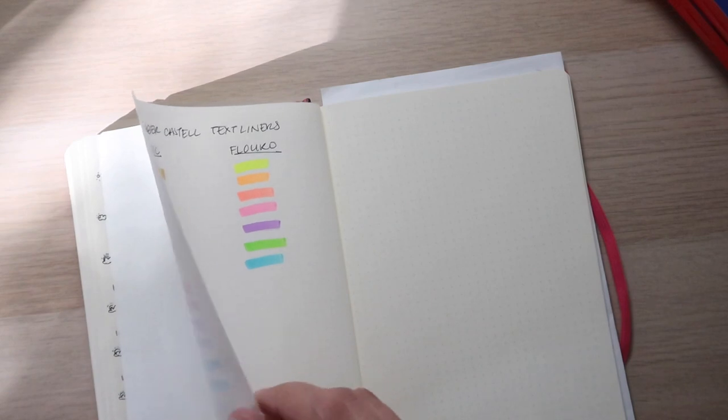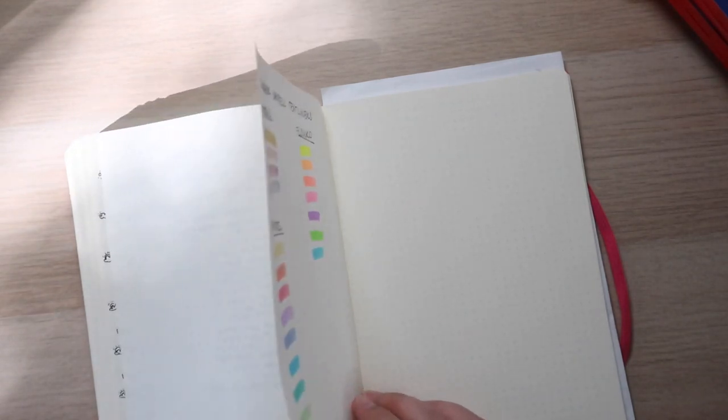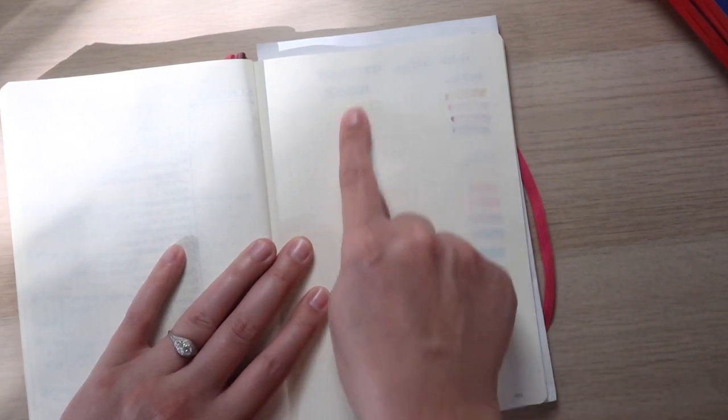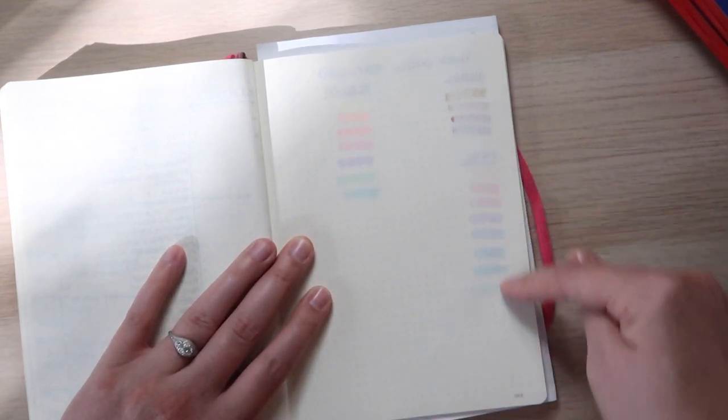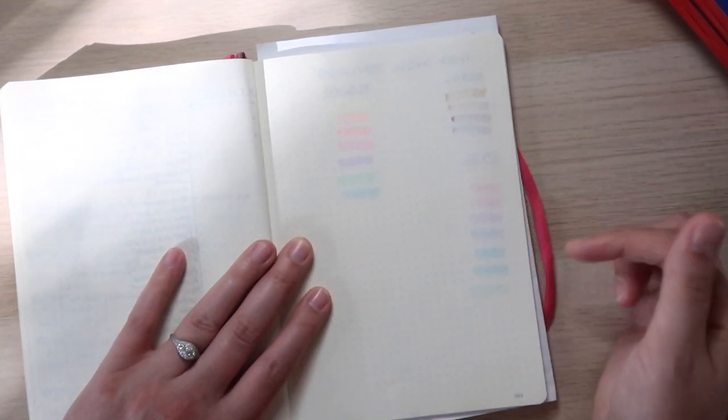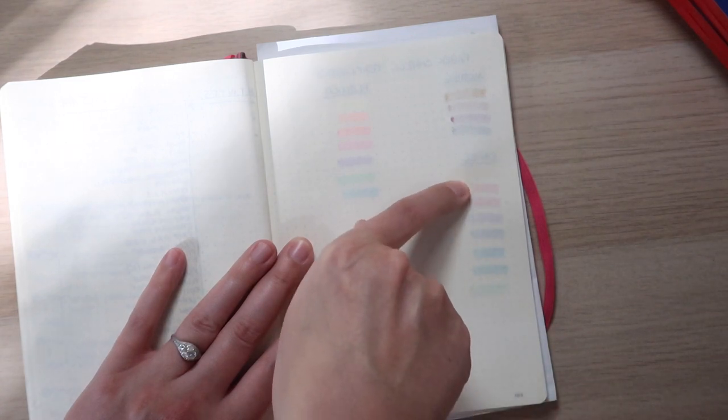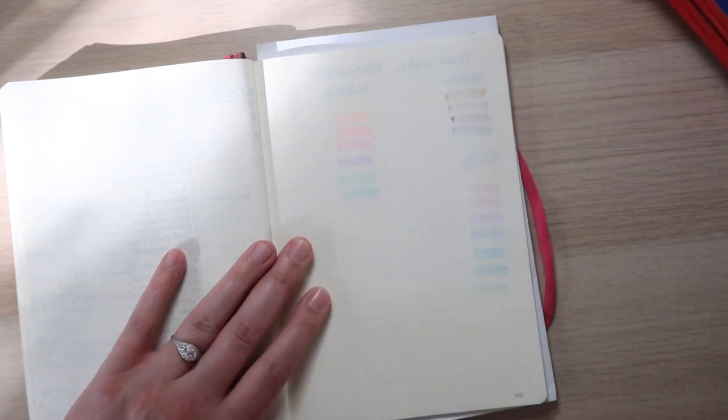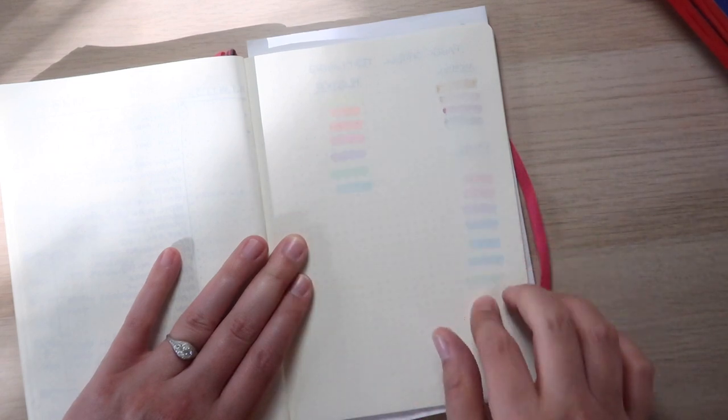Bleed wise. This is the bleedy Loish term. But it gives you a good idea. It looks like the pastels bleed the least. They shadow. But even the tiny puddle at the end of the highlighter seems to barely come through. The super fluorescent has a little bit more of that coming through. But really it's mostly shadowing.